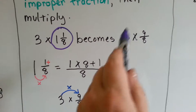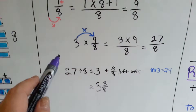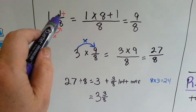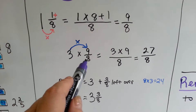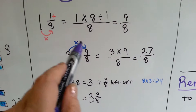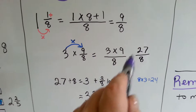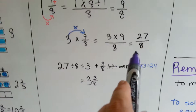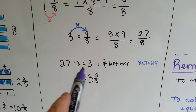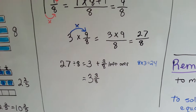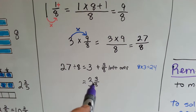Now that we've turned 1 and 1 eighth into the improper fraction 9 eighths, we can solve: 3 times 9 eighths. We're finding 9 eighths three times. 3 times 9 is 27, put it over 8, giving 27 eighths. How many times does 8 fit into 27? 3 times 8 is 24, so we get 3 with a remainder of 3 eighths left over. Our answer is 3 and 3 eighths — the same answer as before.